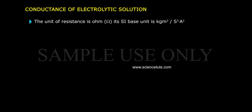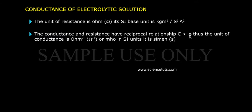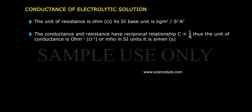The unit of resistance is ohm; its SI base unit is kg·m²·s⁻³·A⁻². Conductance and resistance have a reciprocal relationship: C is directly proportional to 1/R. Thus the unit of conductance is ohm⁻¹ or mho; in SI units it is siemens (S).